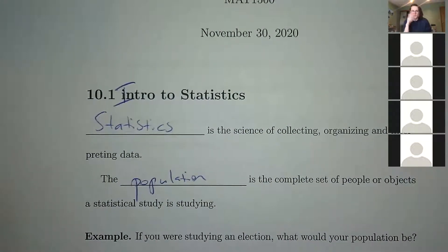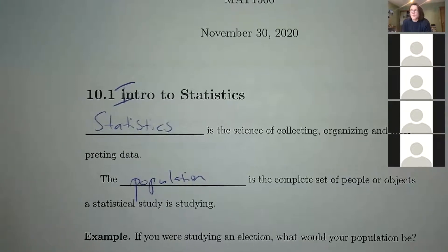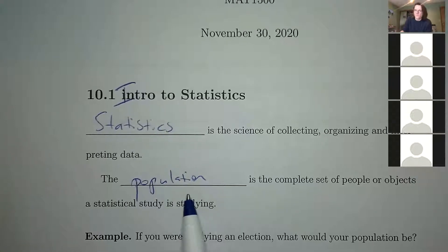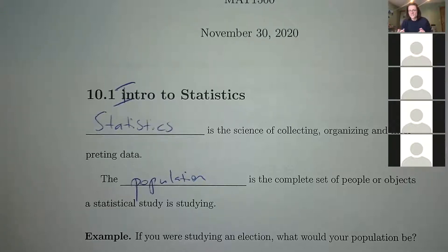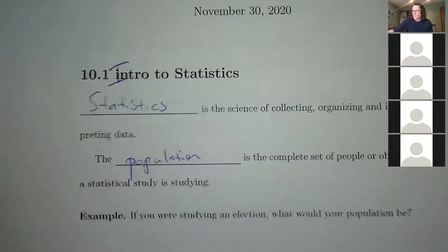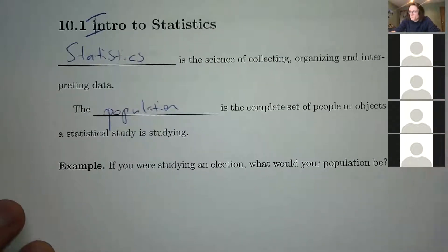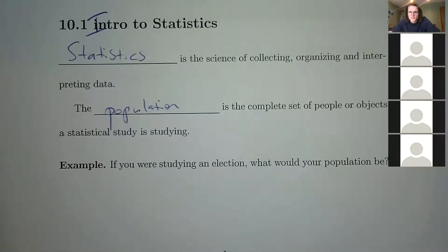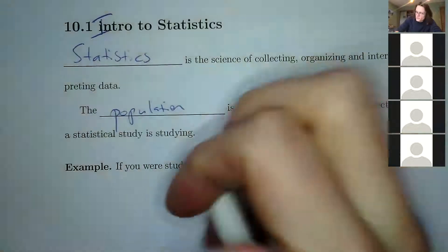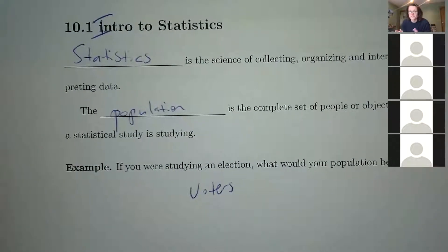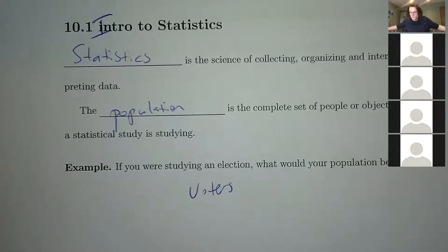The population is the complete set of objects you want to study. In statistics, you want to study something, and most applications involve people — but your population doesn't have to be people. It could be bacteria or anything else. As a quick example, if you're studying an election, your population would just be the voters — all of them.